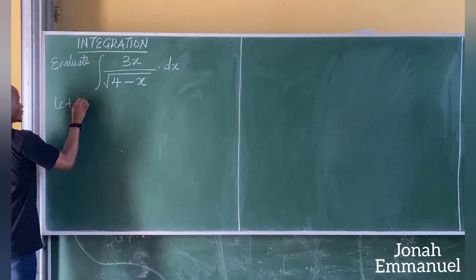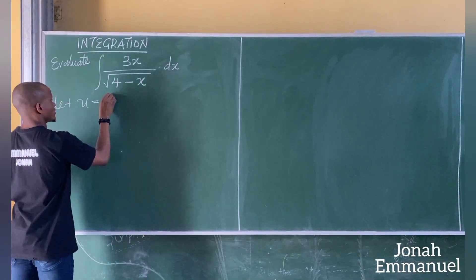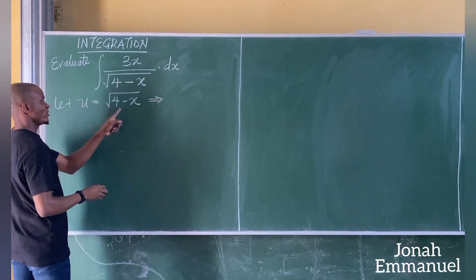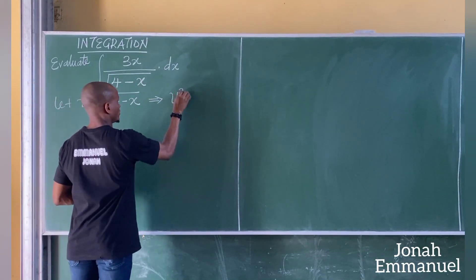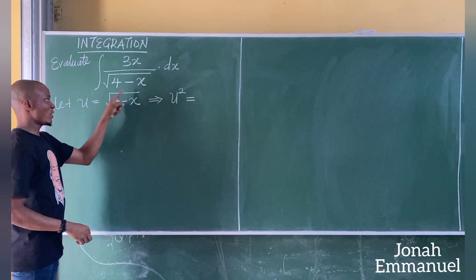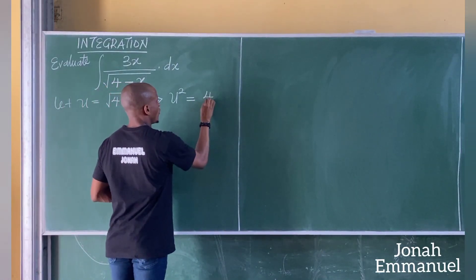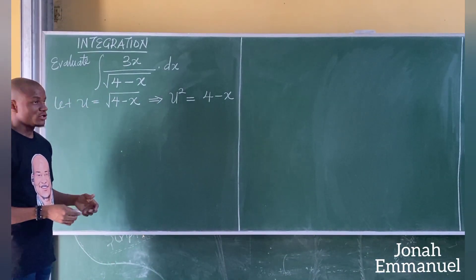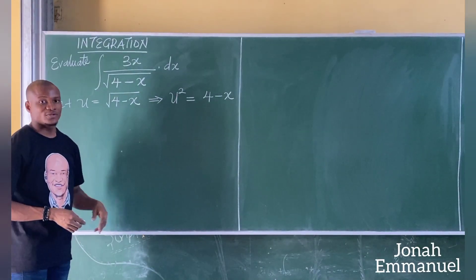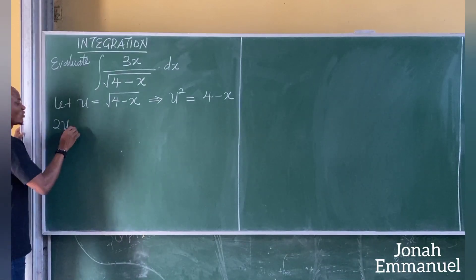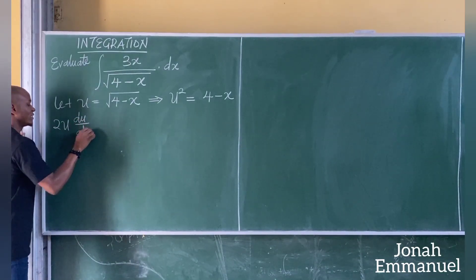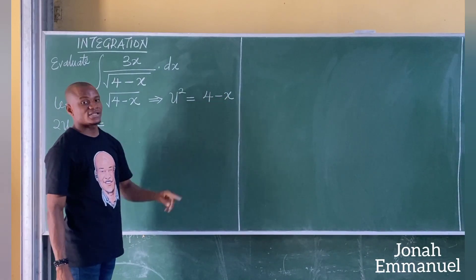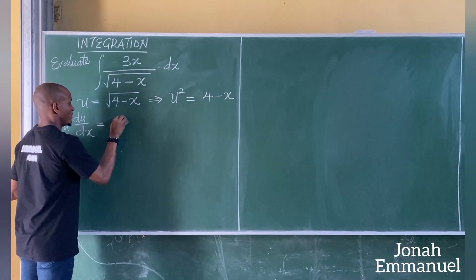I'll also differentiate this using implicit concepts. So if I differentiate u squared using the implicit method, I get 2u times du over dx, equal to — differentiating 4 as a constant gives 0, and differentiating minus x gives minus 1 — so I'm having minus 1.